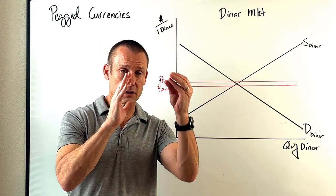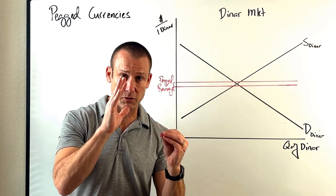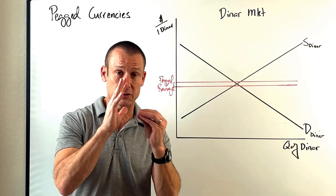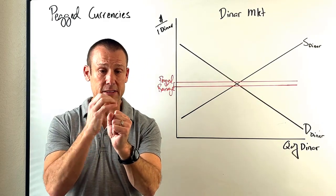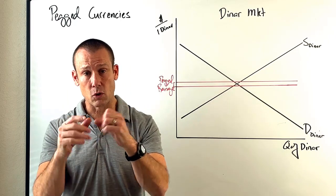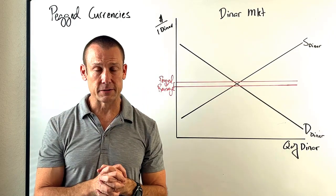Again, other currencies said, hey, we're going to fix our conversion rate to the dollar, promise the conversion rate with the dollar, and the United States is going to promise a conversion rate with gold. System of fixed exchange rates.